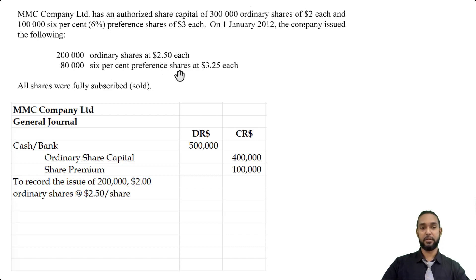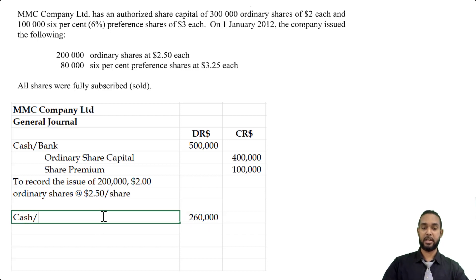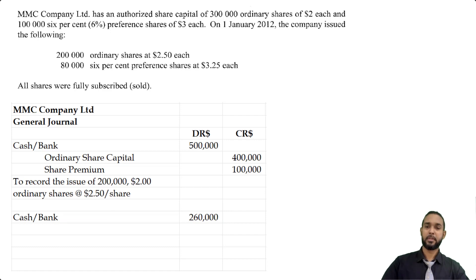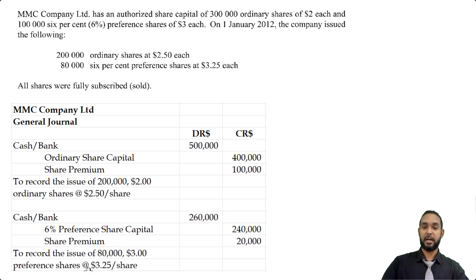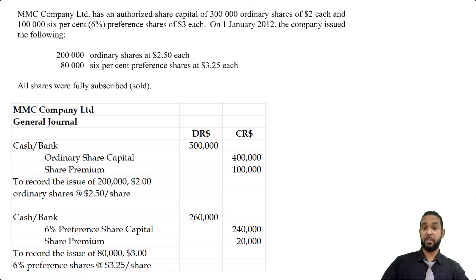We multiply 80,000 by $3.25, giving us a total of $260,000 coming in, so we debit cash or bank for $260,000. That $260,000 is not all going to the credit of preference share capital. The issue price is $3.25 but the par value is $3.00, so we multiply 80,000 by $3.00 to get $240,000, which is credited to the 6% preference share capital account. The remaining $20,000 goes to the share premium account — that's the difference between the par value and the actual issue price. The narration reads: to record the issue of 80,000 $3 preference shares at $3.25 each.